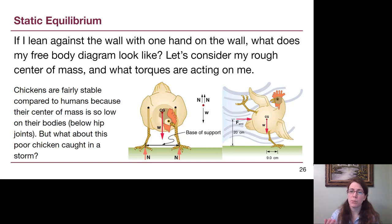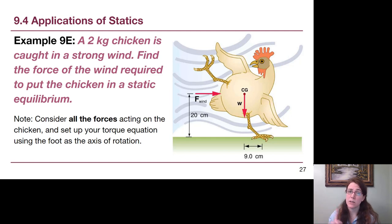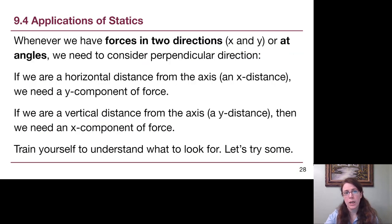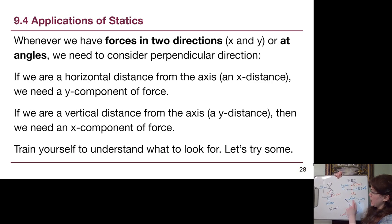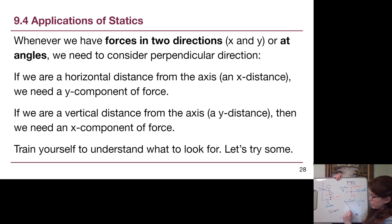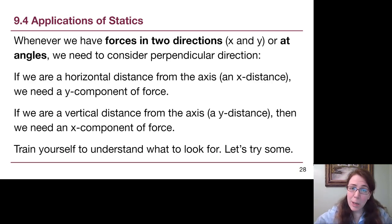Our textbook has put this chicken into a windstorm, and that's a full worked example video as well. We'll use the ideas of net forces adding up to zero and torques adding up to zero to figure out how strong that wind would have to be. Whenever we have forces in two directions — side-to-side and up-and-down — we have to be careful to understand the perpendicular idea. The side-to-side force from the wall needs the up-and-down distance to the axis, and the up-and-down force of gravity needs the side-to-side distance to the axis.